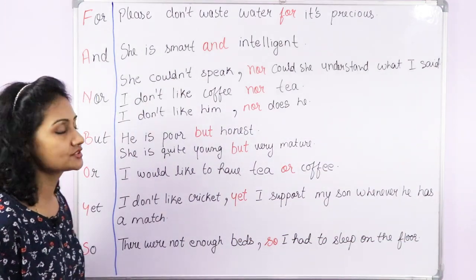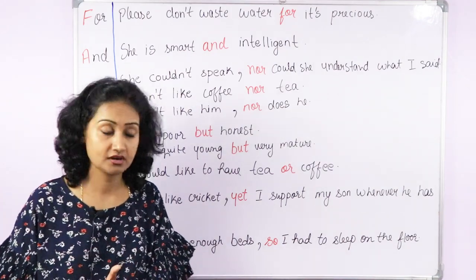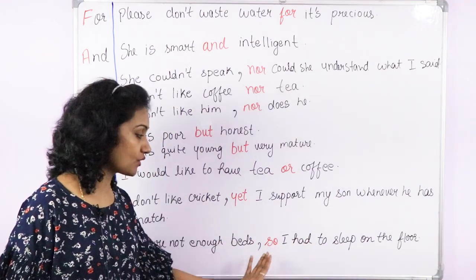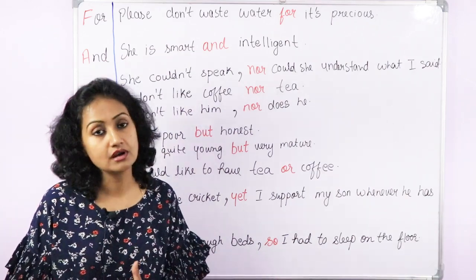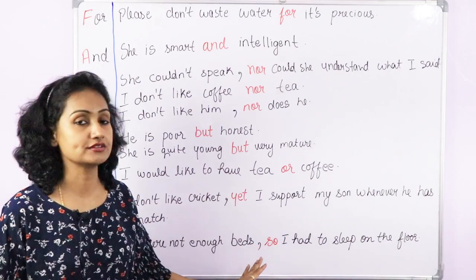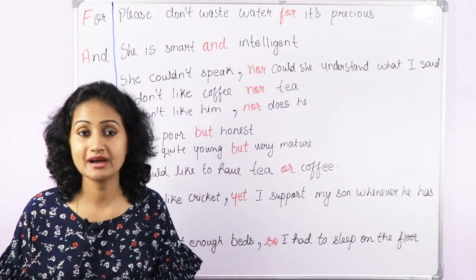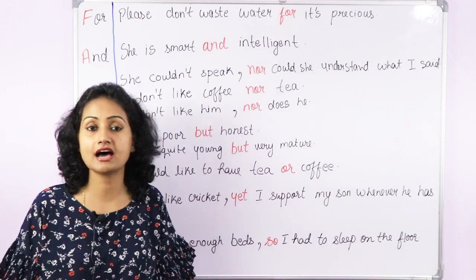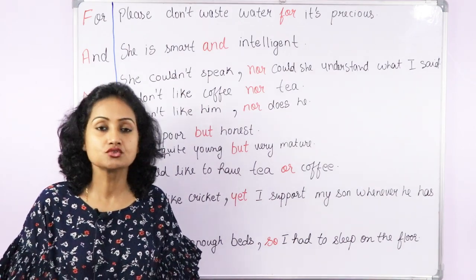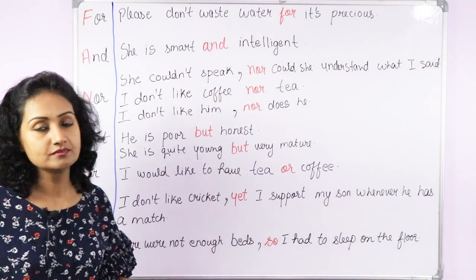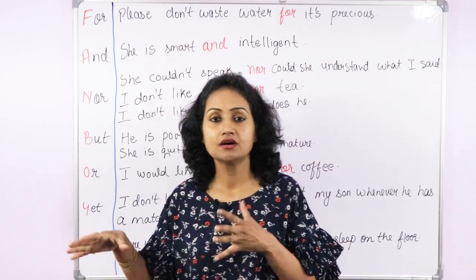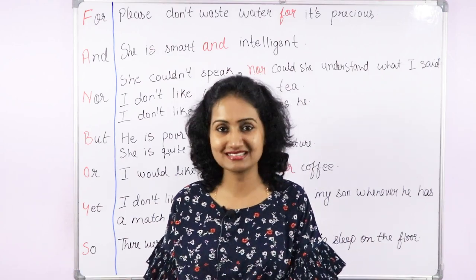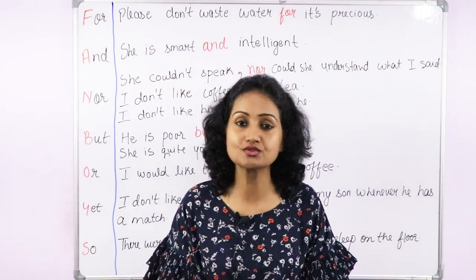Last is 'so.' So means 'for that reason' or 'therefore.' For example: 'There were not enough beds, so I had to sleep on the floor.' Or: 'There is a holiday tomorrow and the office will be closed, so I have to finish all my work today.' It's easy to remember all seven coordinating conjunctions — just remember the word FANBOYS. Now try to make some sentences on your own using these conjunctions.